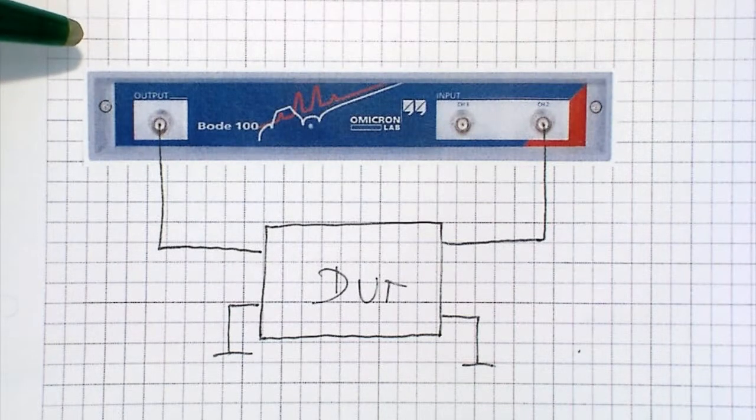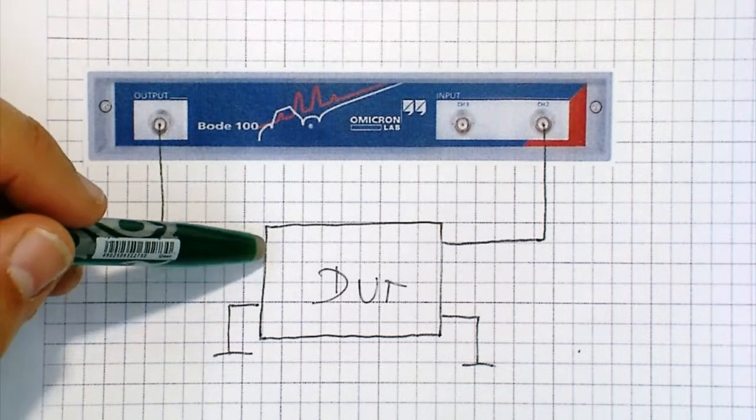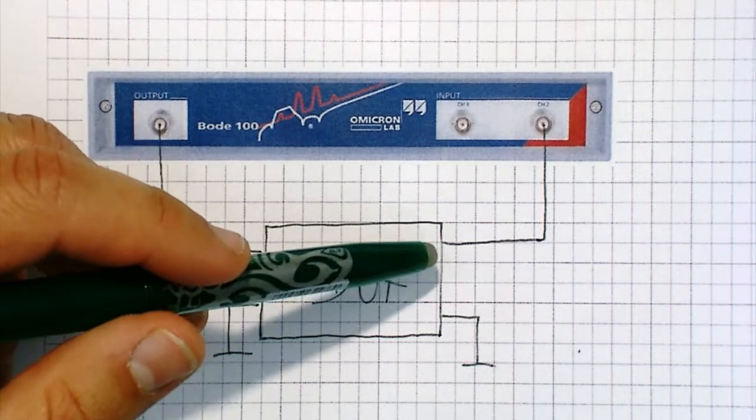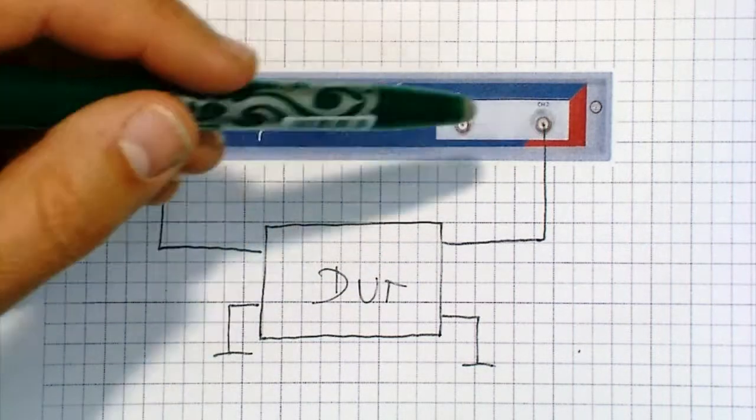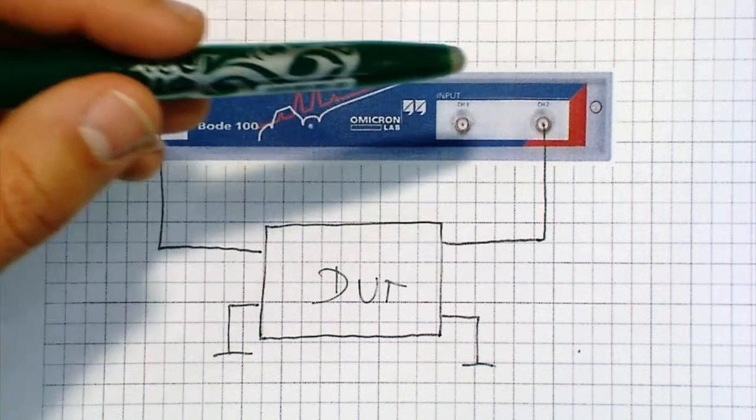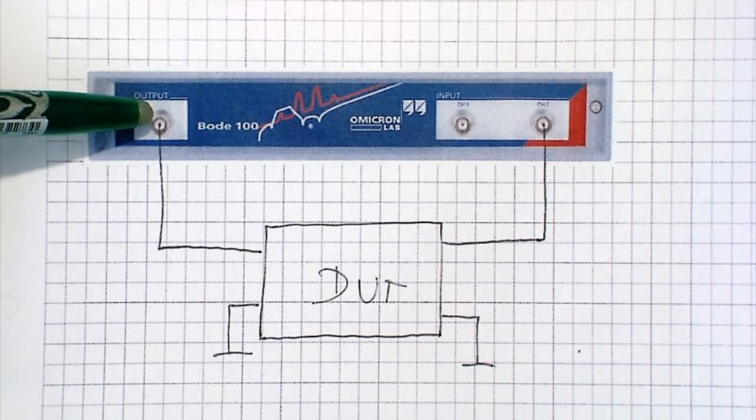To measure the S-Parameters with the Bode 100, we simply connect the input of the device under test to the output of the Bode 100 and the output of the device under test to channel 2 of the Bode 100. It is important that channel 2 is terminated with 50 ohms since the Bode 100 has a 50 ohm source impedance.